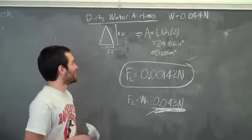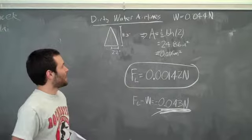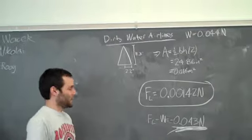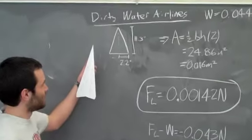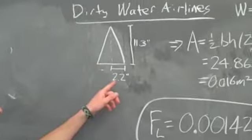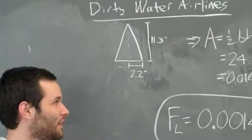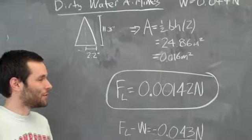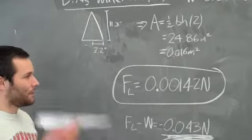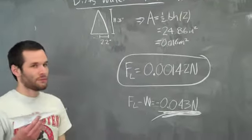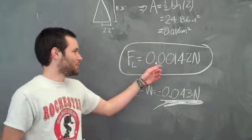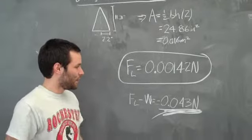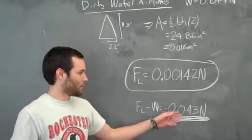Next, we looked at Dirty Water Airlines. We found that weight to be 0.044 newtons. We then found the area, which is just a triangle, with base 2.2 and height 11.3 inches. Using the area equation, we found the area to be 0.016 meters squared. And then we used the lift force equation and found the lift force to be 0.00142 newtons. Subtracting the weight from that, we found 0.043 newtons.